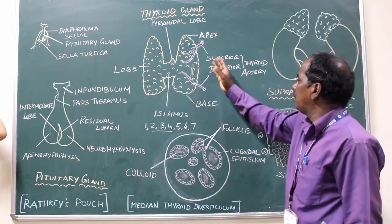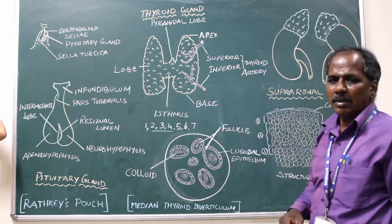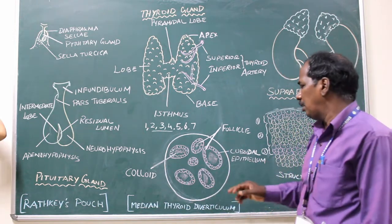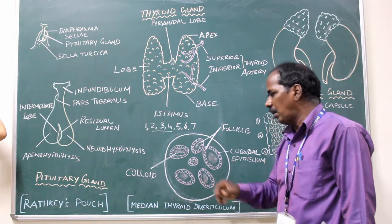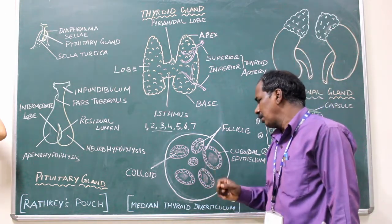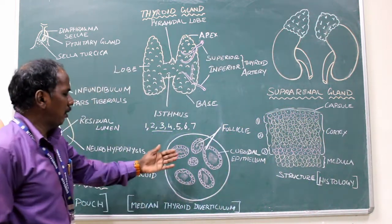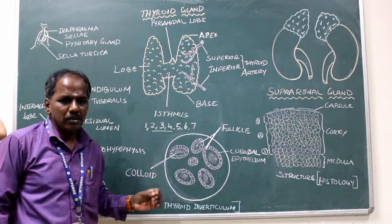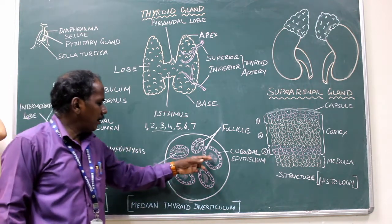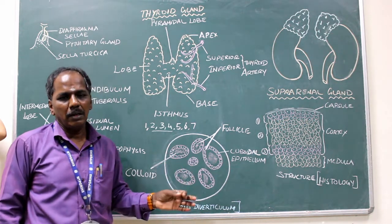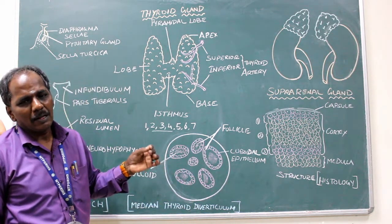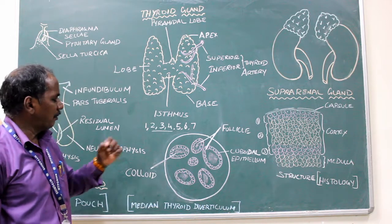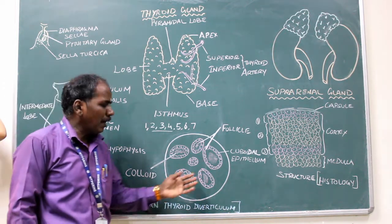Blood supply: the thyroid gland consists of superior and inferior thyroid arteries which supply the gland. Histology or structure of the thyroid gland: it consists of a number of lobules, each containing follicles. The follicles are lined by cuboidal epithelium. Inside the follicle there is a substance known as colloid — it is the inactive form of the thyroid hormone; the T3 hormone is present inside the follicle. Development: it develops from the median thyroid diverticulum.